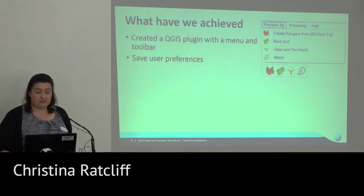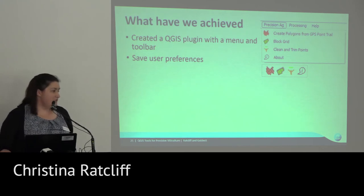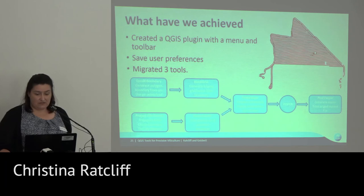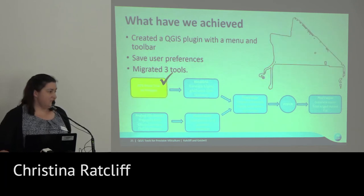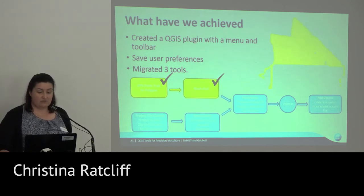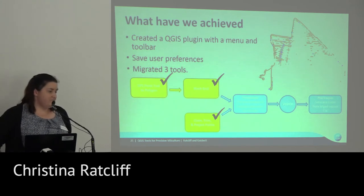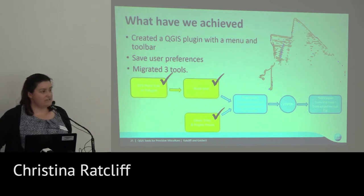We've created a plugin with a menu and a few small user preferences — mainly where the data is coming from or going to. We have successfully migrated three tools: the first is a GPS point trail to a polygon, required for some of the later processing steps; converting that to a customised raster CSV format; and being able to clean the CSV or yield monitor data to remove outliers, re-project it so that the coordinates in the text files are in the coordinate system of the raster block grid output.